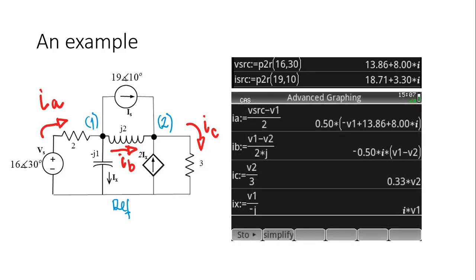And next I define who is ia, ib, ic and ix. Those are not equations, those are merely definitions. We are telling the calculator how to compute the value of ia, ib, ic and ix if we know what are the values of v1 and v2.